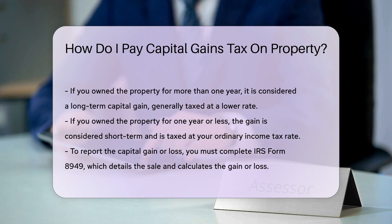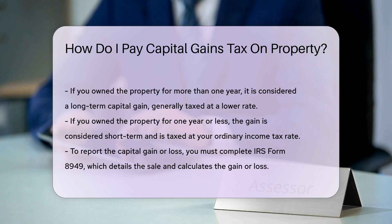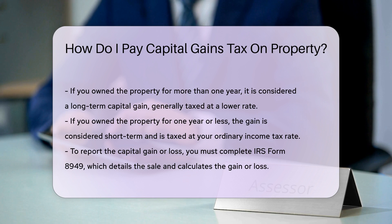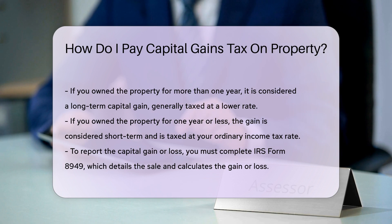To report the capital gain or loss, you must complete IRS Form 8949. This form details the sale and calculates the gain or loss. You will also need to include Schedule D, Form 1040, when filing your tax return.